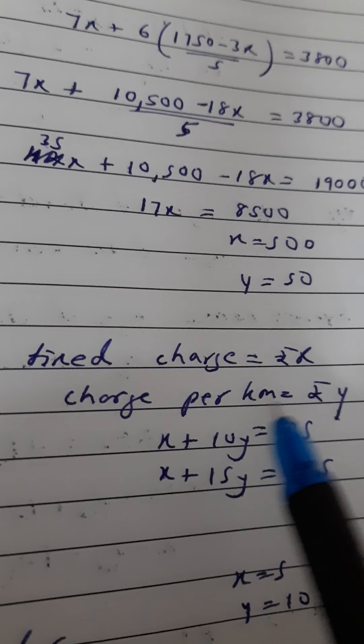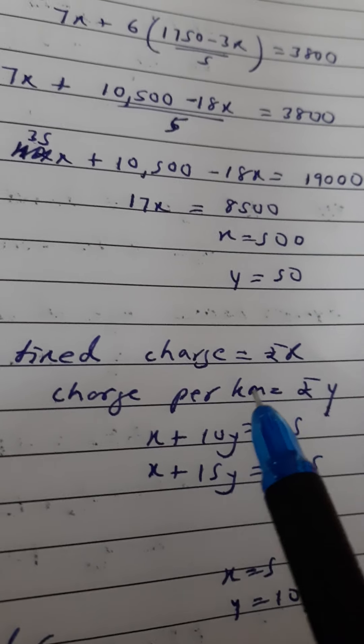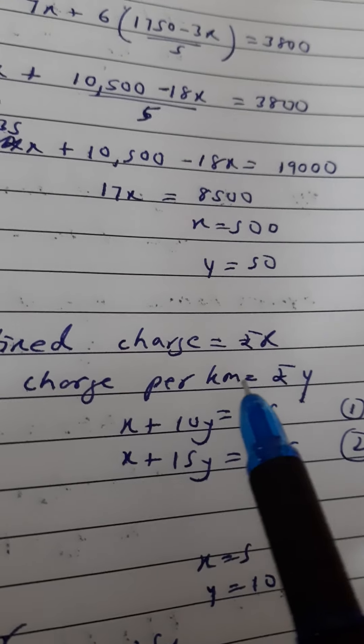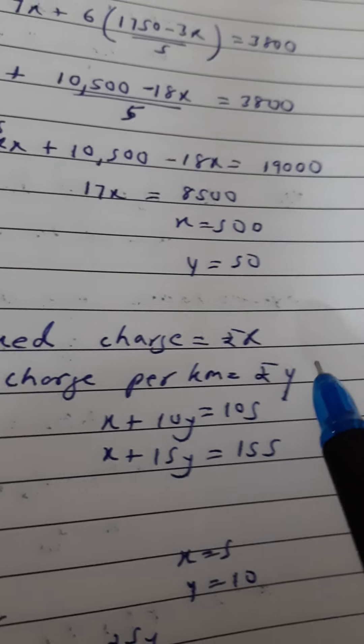Then he has to pay charge per kilometer. For every kilometer he is traveling, he has to pay additional y. So let the fixed charge be x and the charge per kilometer be y.